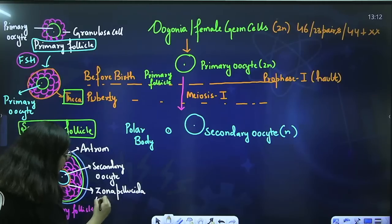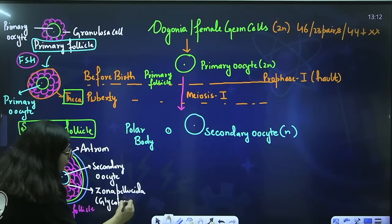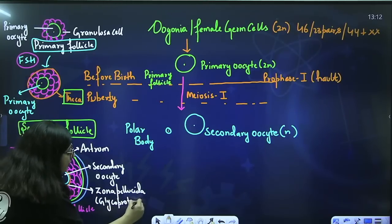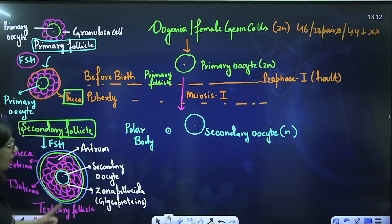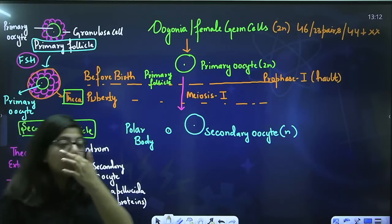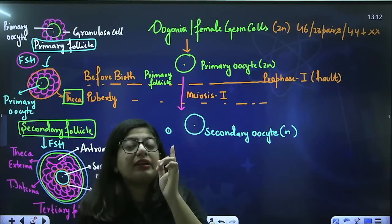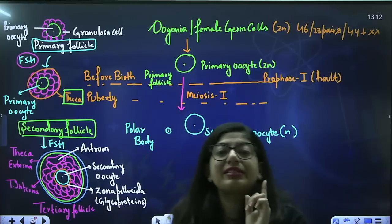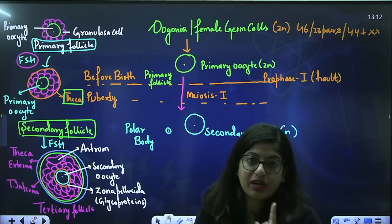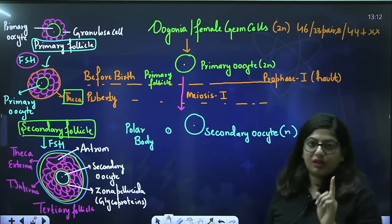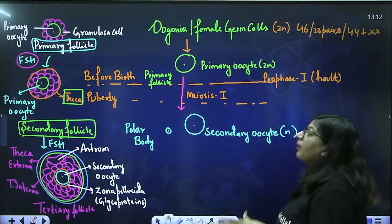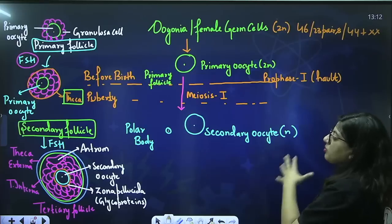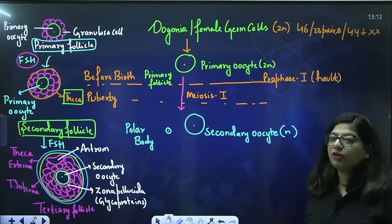The secondary oocyte produces a glycoproteinaceous layer around itself known as the zona pellucida. It is a glycoproteinaceous layer — it does not contain any cells; only glycoproteins are present — and it is secreted by the secondary oocyte.